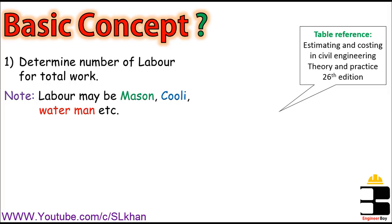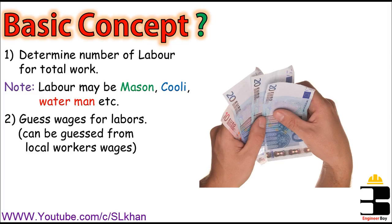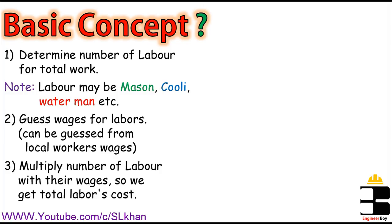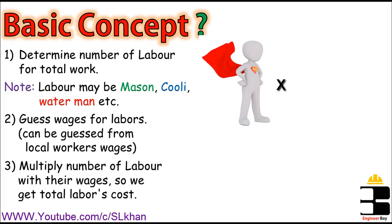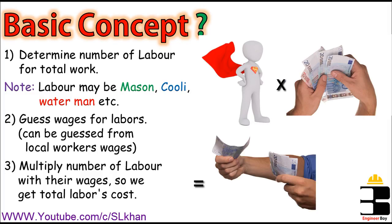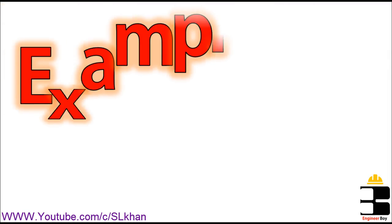Once we determine the number of labors, we can estimate their wages from local workers' wages. For example, we can visit a construction site and ask the employees their wages — that's just a simple estimation method. Once we have their wages, we multiply the number of labors with their wages to get the total labor cost. That's the basic concept of calculating the total cost of labor.